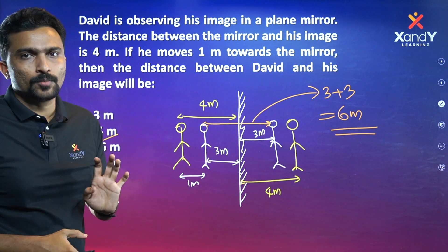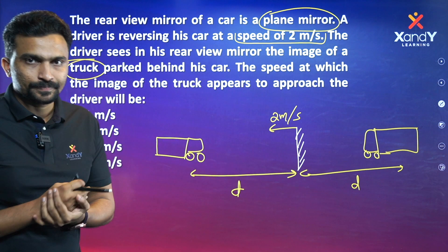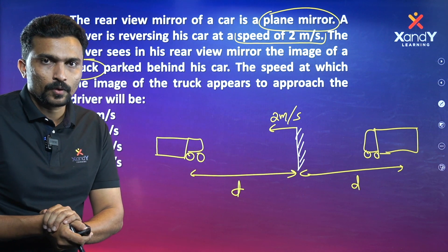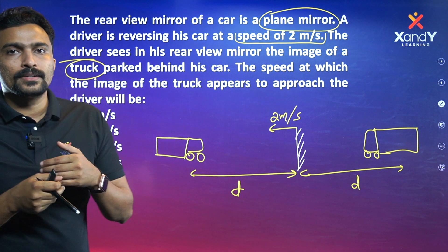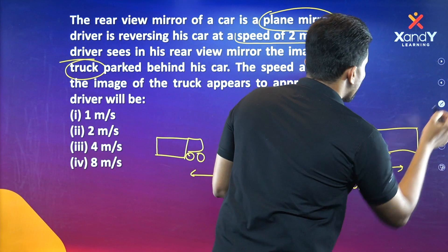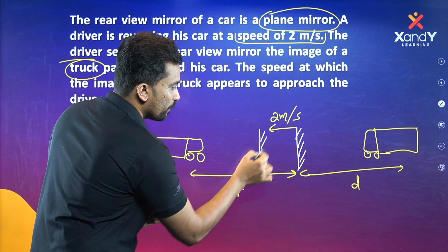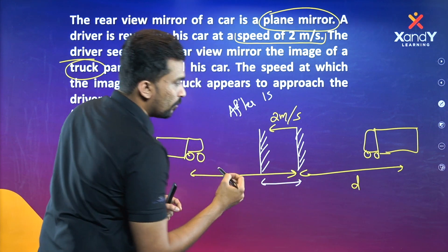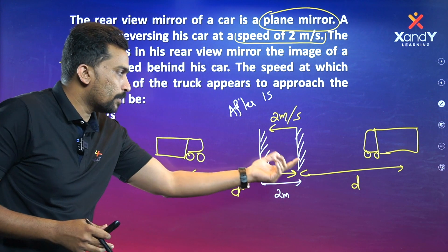In one second, the mirror moves 2 meters toward the truck. Initially the object distance is D. After one second, the mirror has traveled 2 meters, so the new distance between the mirror and the truck is D minus 2.